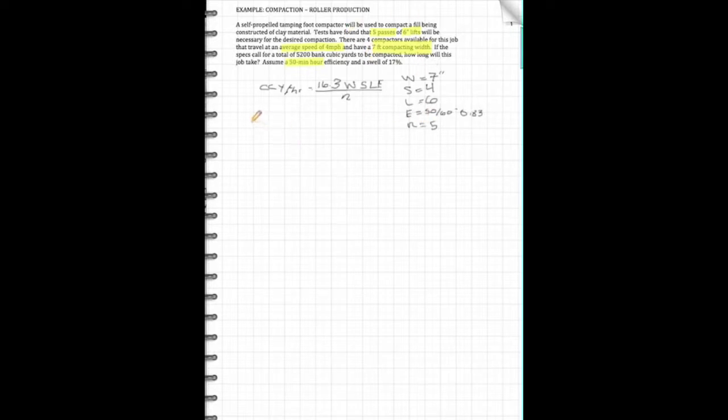Gather all these guys here, and we're going to just go ahead and calculate the production. So the production here is equal to 16.3 times 7 times 4 times 6 times 0.83, and we're going to divide all of that by 5. Alright, so you go ahead and do that, and you're going to get 456.4.